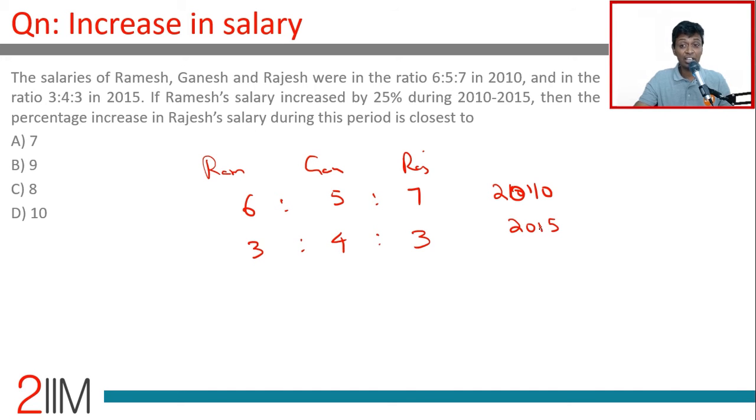If Ramesh's salary increased by 25% during 2010 to 2015, 6 increases by 25% or 6 will become 6 plus one-fourth of 6. One-fourth of 6 is 1.5, will become 7.5. This 6 becomes 7.5.